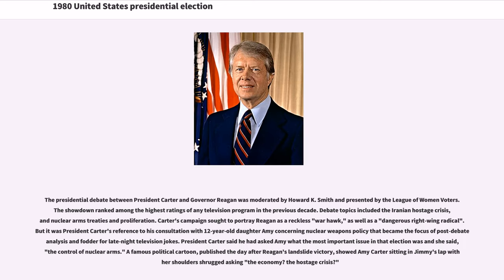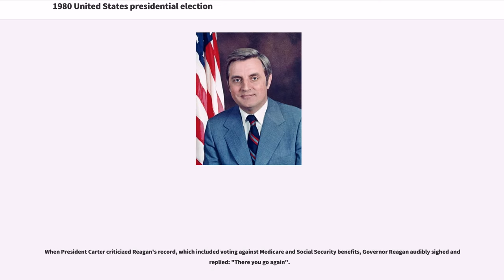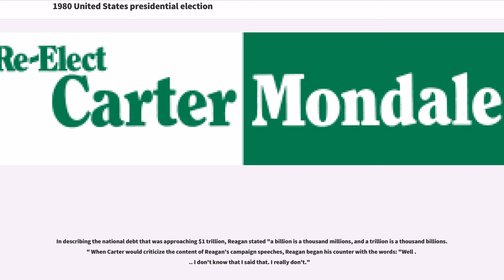The presidential debate between President Carter and Governor Reagan was moderated by Howard K. Smith and presented by the League of Women Voters, ranking among the highest ratings of any television program in the previous decade. Debate topics included the Iranian hostage crisis and nuclear arms treaties and proliferation. Carter's campaign sought to portray Reagan as a reckless warmonger and dangerous right-wing radical. But it was President Carter's reference to his consultation with his 12-year-old daughter Amy concerning nuclear weapons policy that became the focus of post-debate analysis and fodder for late-night television jokes. Carter said he had asked Amy what the most important issue was and she said the control of nuclear arms.